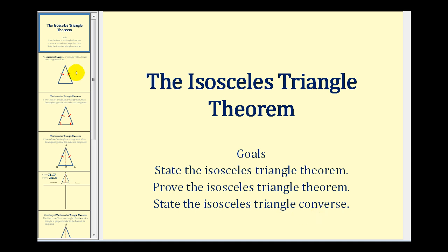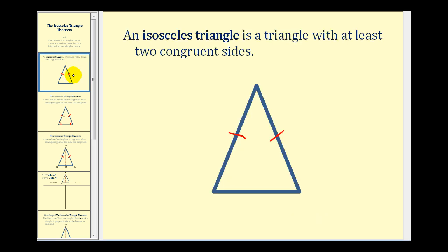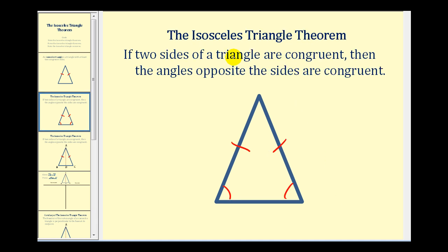Let's first define an isosceles triangle. An isosceles triangle is a triangle with at least two congruent sides, as we see here. The isosceles triangle theorem states that if two sides of a triangle are congruent, then the angles opposite the sides are congruent, as we see here.